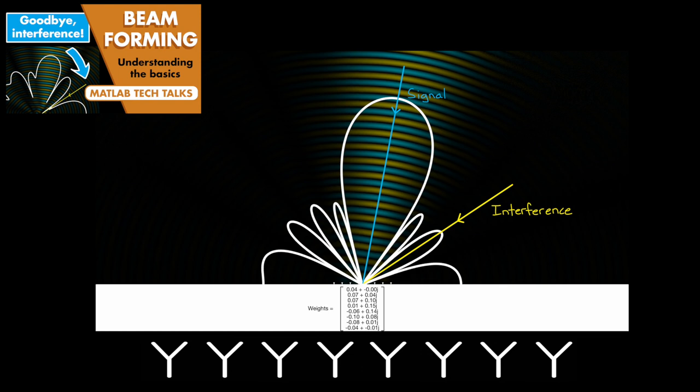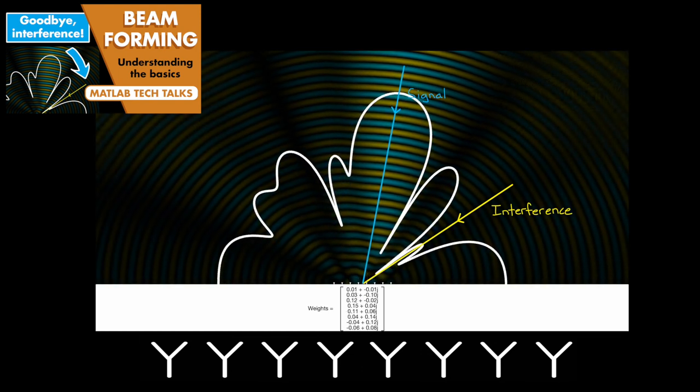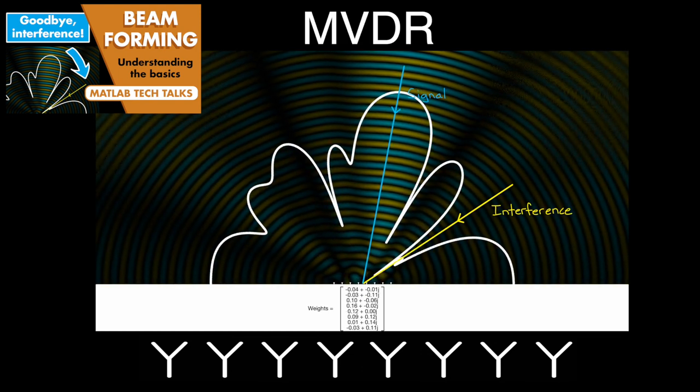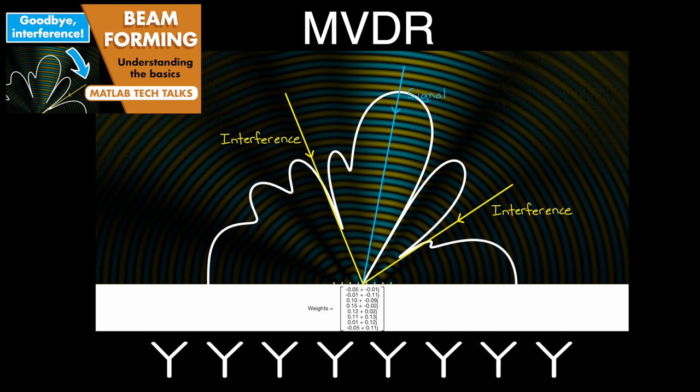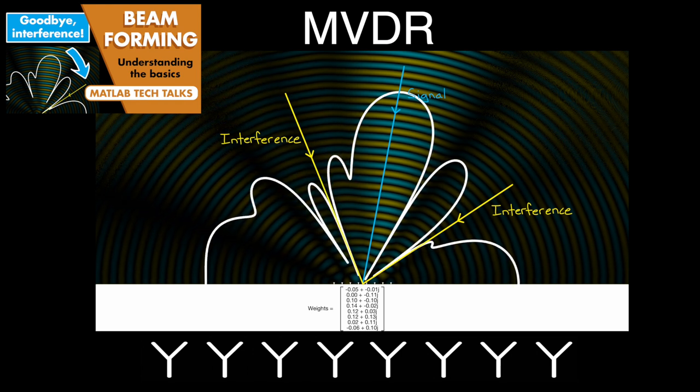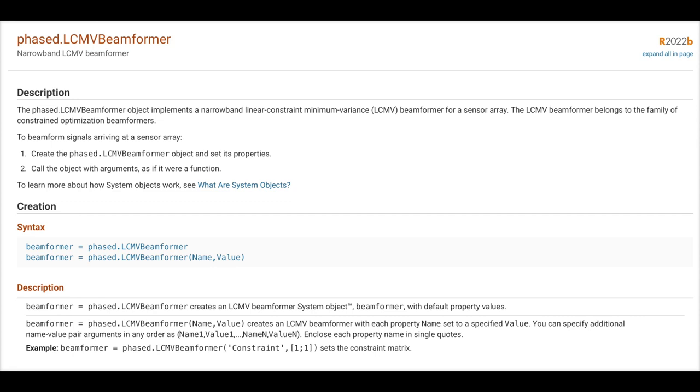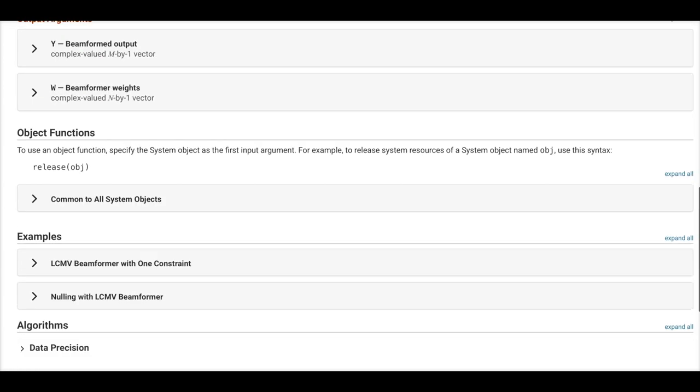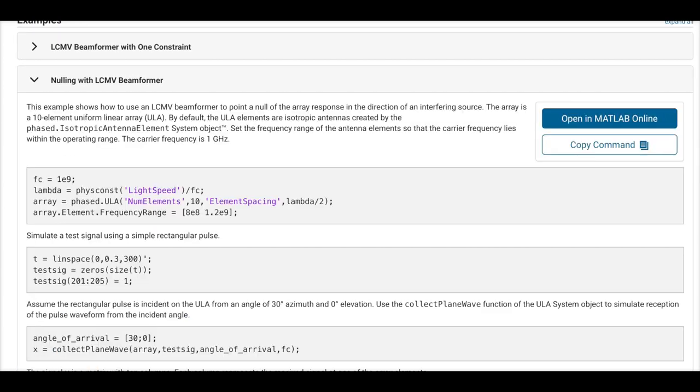In fact, in the video on beamforming, I showed you a particular adaptive algorithm called MVDR, which maximizes the signal-to-noise plus interference ratio in an environment with interferences. And that kind of algorithm could also be used for radar applications as well. However, there are other algorithms that you could use to help optimize the array weights beyond just MVDR. And one such algorithm is called Linear Constraint Minimum Variance, or LCMV. And I've left a link to a MATLAB example of it if you would like to try it out yourself.